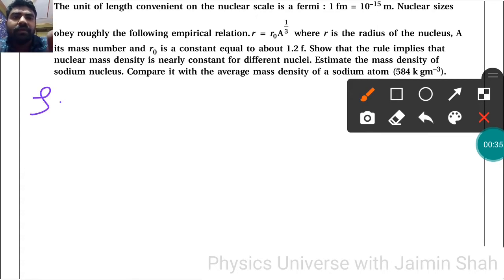Density equals mass upon volume. What is the mass formula? It's the nuclear number A times 1.6 × 10^-27.